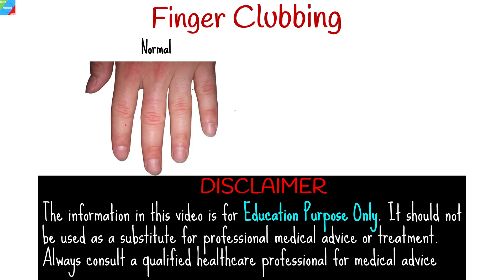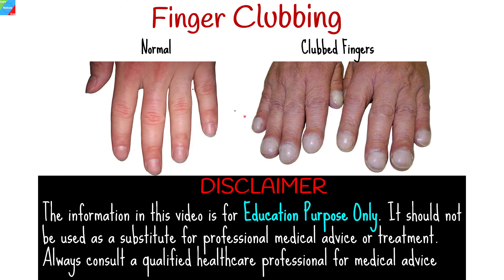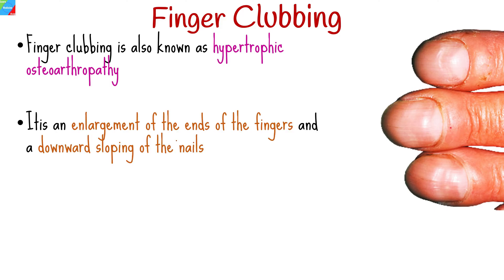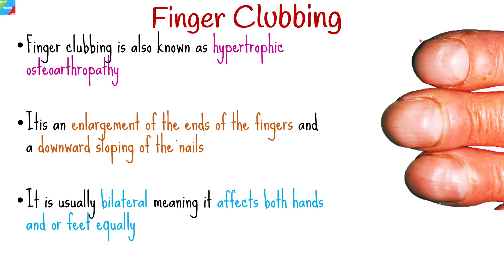These are normal fingers and these are clubbed fingers. Clubbing of the fingers, also known as hypertrophic osteoarthropathy, is characterized by an enlargement of the ends of the fingers and a downward sloping of the nails. It is usually bilateral, meaning it affects both hands or feet equally. There are two types of finger clubbing.